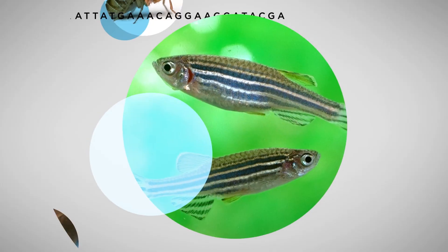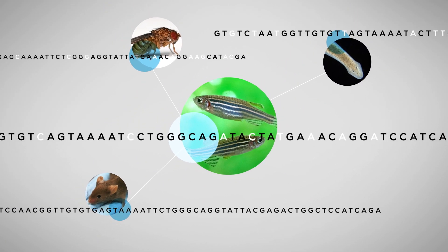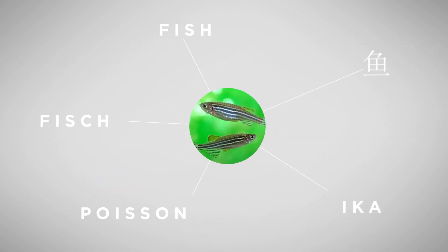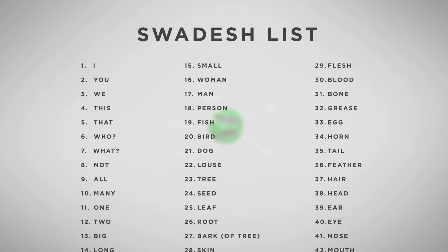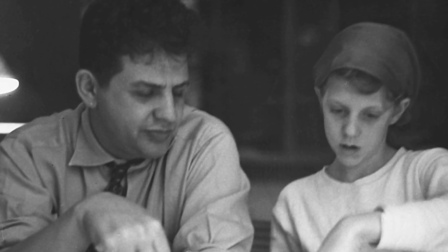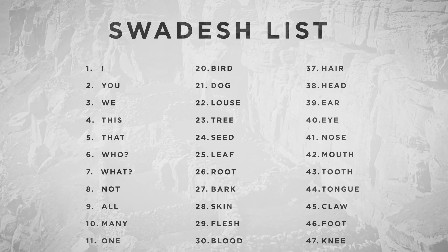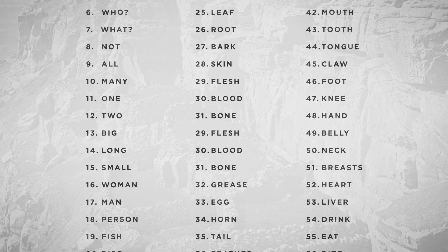In the same way that we need to use homologous genes when we compare organisms — comparing apples to apples — we want to use homologous words also. The set of homologous words we use is called the Swadesh list. In the 1950s, Maurice Swadesh, who was a very smart linguist, determined a set of 100 words that seemed to be most resistant to change by influence from other languages.